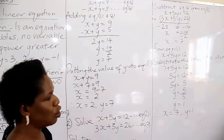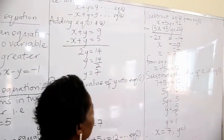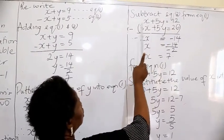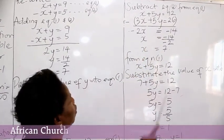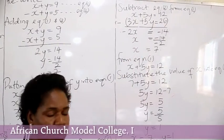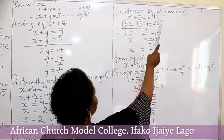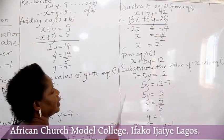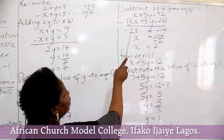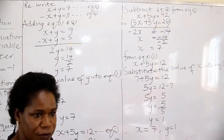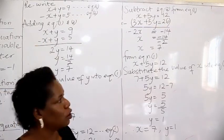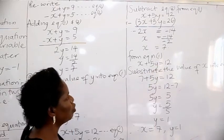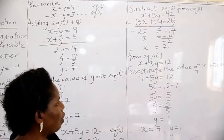When you subtract equation 2 from equation 1, the negative sign affects all the terms in equation 2. Therefore, x minus 3x gives you negative 2x. The minus sign makes 5y minus 5y give you 0 — so you have eliminated y. Then 12 minus 26 gives you negative 14. You transpose the coefficient of x, which is negative 2 — it becomes division. So we have negative 14 divided by negative 2. The negatives cancel, and 14 divided by 2 gives you 7. That is the value of x.